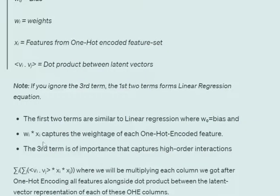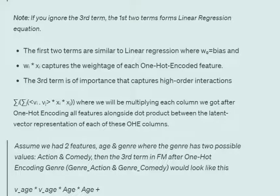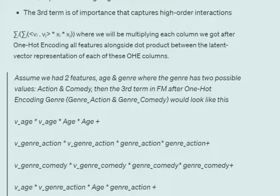In the equation, w0 is the bias and wi · xi captures the weight of each one-hot encoded feature. The third term — Σi Σj (vi · vj) · xi · xj — helps capture the higher-order interactions discussed earlier. For each pair of features, we multiply the one-hot encoded columns together and also compute the dot product between their latent representations. Each term therefore involves four values: the latent representation of feature i, the latent representation of feature j, and the values of features i and j.